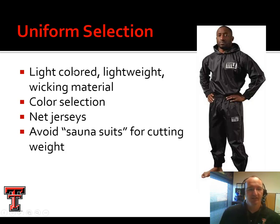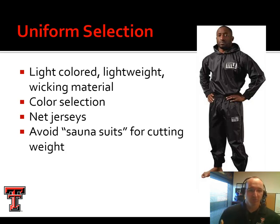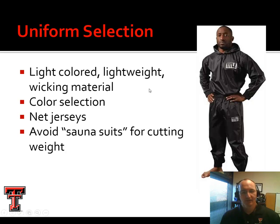For uniform selection, light-colored, lightweight, wicking materials like Under Armour or Dry Fit are preferred. Lighter colors retain less heat — when I was at Arizona, our defensive players wearing dark navy blue consistently had more problems than our offensive players in white, just from jersey selection alone. Net jerseys that are breathable are acceptable, but sauna suits — plastic suits that retain body heat and sweat — are to be avoided as they significantly increase heat illness risk.